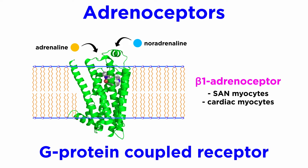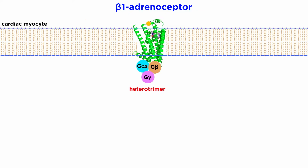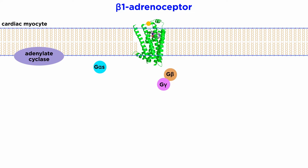The beta-1 adrenoceptor is a G-protein coupled receptor, which mediates these effects through a similar cascade as discussed in the bronchodilators tutorial, which covered signaling through the beta-2 receptor. Like the beta-2 receptor, the beta-1 adrenoceptor couples to G-alpha-S, which dissociates from its G-alpha-beta-gamma heterotrimer and activates the enzyme adenylate cyclase. This results in enhanced conversion of ATP to cAMP, causing increased intracellular cAMP concentrations.